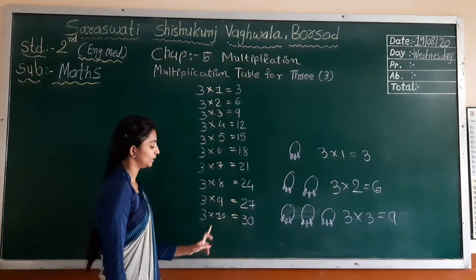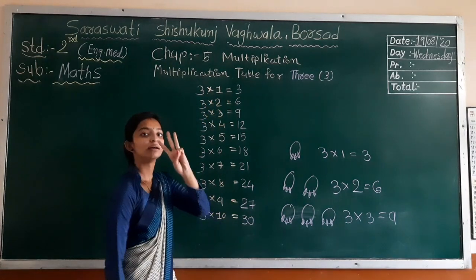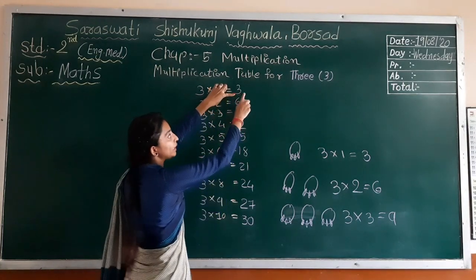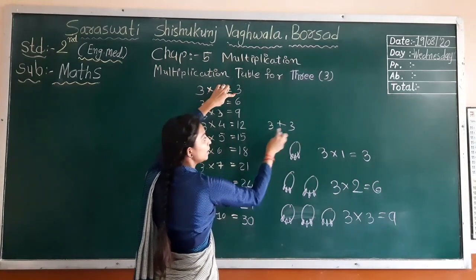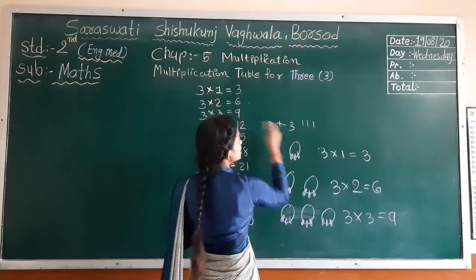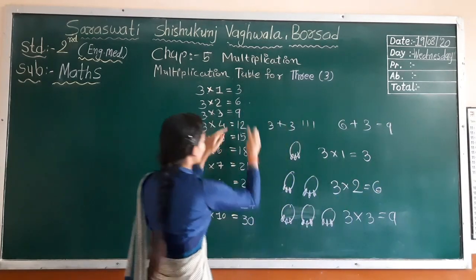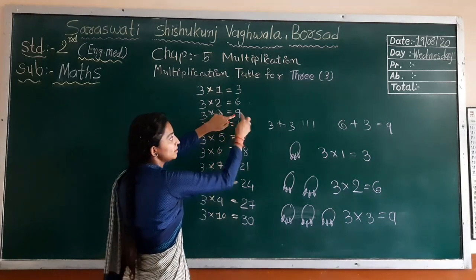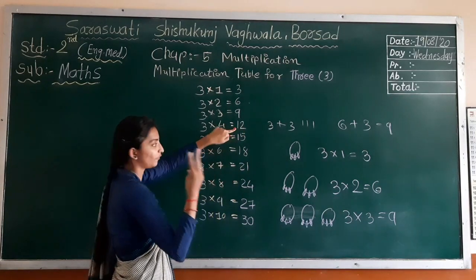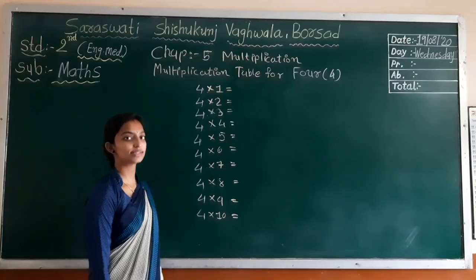Three multiplied by ten equal to thirty. Now another trick I will give you — each number you have to add three times. Three ones are three. Now add three into three: three, four, five, six — here we get three twos are six. Next, six add another three: six, seven, eight, nine. Then nine add another three: nine, ten, eleven, twelve. Then twelve add three more: twelve, thirteen, fourteen, fifteen — three fives are fifteen. This way you will get this table.